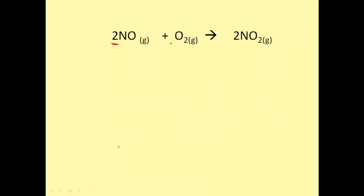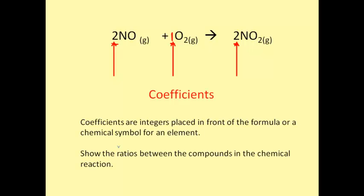The numbers in front of each substance are the coefficients. Here we have a 2 to 1 ratio of nitrogen monoxide to oxygen. Remember that the 1 is present; it's just not written—it's understood. This is a chemical convention. The coefficients tell us that 2 nitrogen monoxide react with 1 oxygen to produce 2 nitrogen dioxides. Coefficients are integers placed in front of the formula or chemical symbol for an element. They show the ratios between the compounds in the chemical reaction.